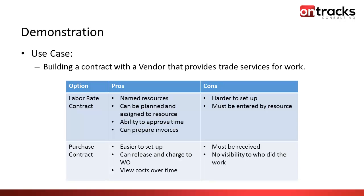You also have the ability to approve time — by default in Maximo, contractor time is unapproved, so a supervisor or planner scheduler can come in and approve that information. You can also prepare your own invoices: if people are putting their time against work orders at agreed rates, at the end of the month you can select all labor entries for a particular vendor for a particular time period, generate your own invoice, and send it off for payment. If the vendor's invoice doesn't match, the burden is on them to justify the variance.